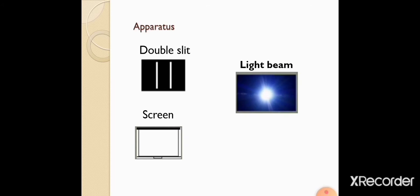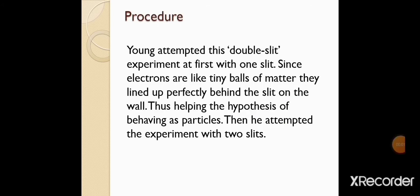Ek double slit use karenge, screen hogi, aur light beam hogi. Young attempted this double slit experiment at first with one slit — since electrons are like tiny balls of matter, they lined up perfectly behind the slit on the wall, thus helping the hypothesis of behaving as particles. Phir usne double slit ke saath experiment attempt kiya. Sabse pehle Young ne double slit experiment ko single slit ke saath perform kiya tha, jismein electrons slit ke behind perfectly line up hoge the, jisse hum analyze kar sakte hain ke electron as a particle behave kar raha hai.